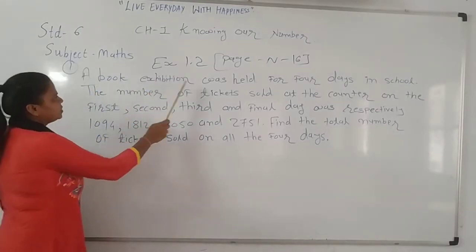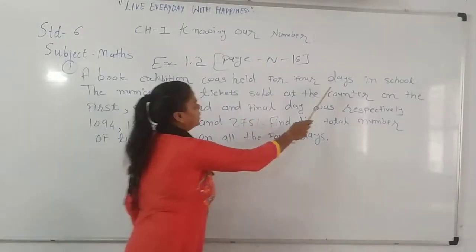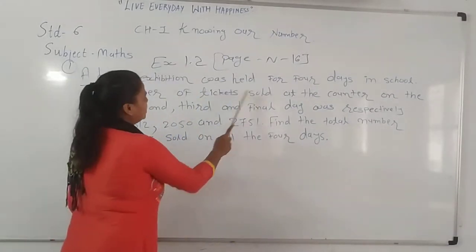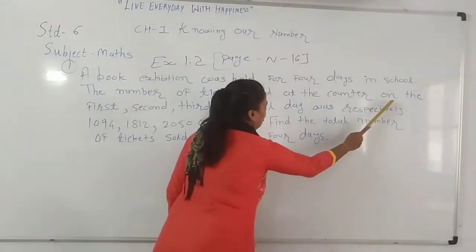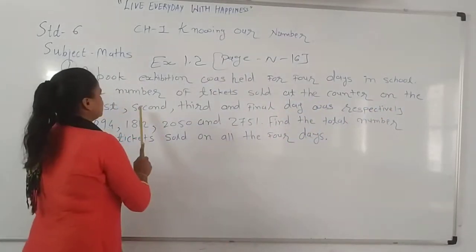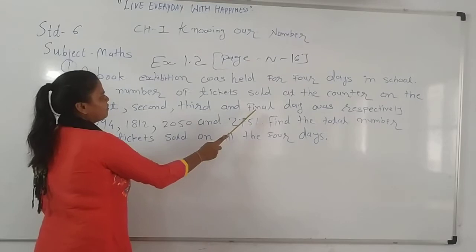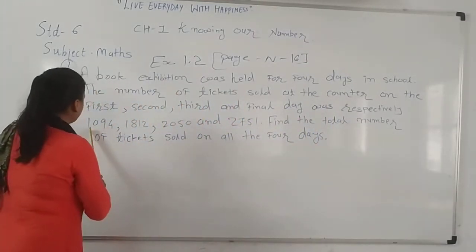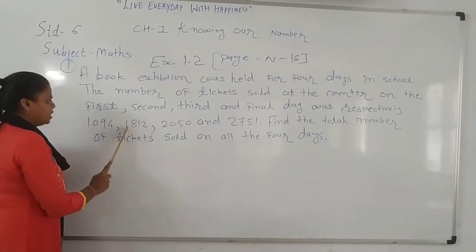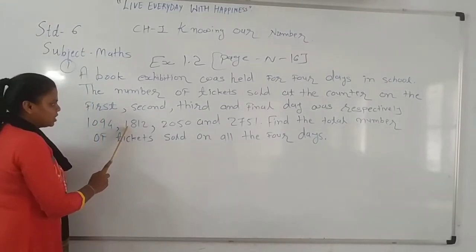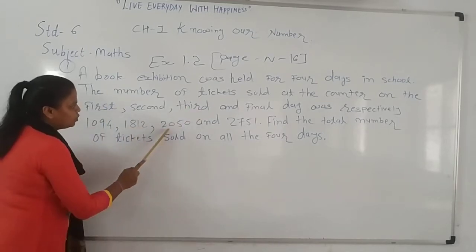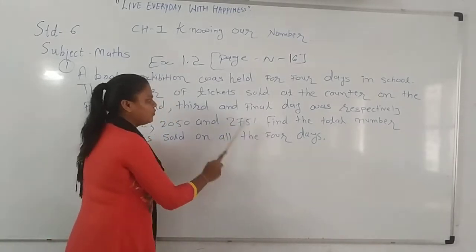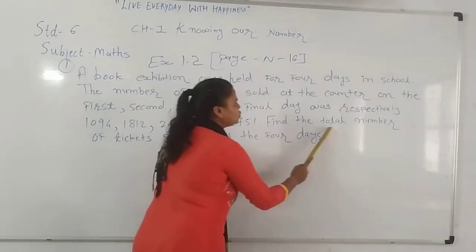A cultural show was held for 4 days in a school. The number of tickets sold at the counter on the first, second, third and final day were respectively: first day 1,094, second day 1,812, third day 2,015, and final day 2,751. Find the total number.